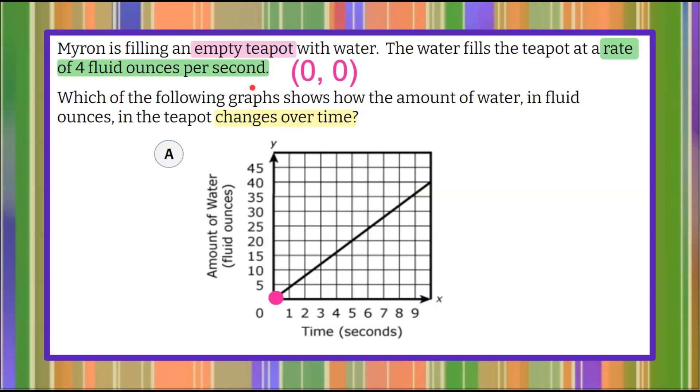So when we look at this and we know that that rate is four fluid ounces per second, we can also translate that to be the ordered pair, four fluid ounces per second. So time is our X, ounces of water in the pot is Y. So that means after one second there should be four fluid ounces.